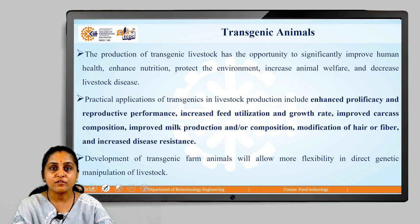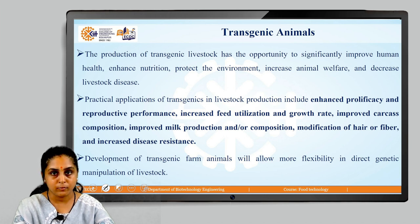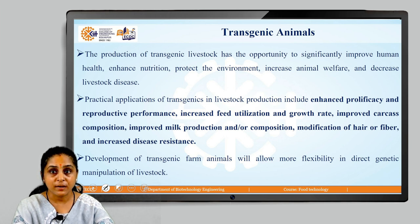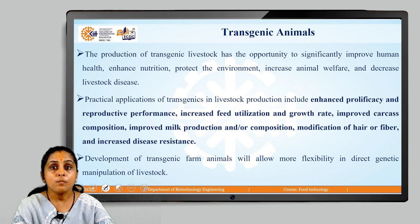Practical applications of transgenics in livestock production are many. They include enhanced prolificacy and reproductive performance, increased feed utilization, growth rate, improved carcass composition, improved milk production and composition, modification of hair or fiber, and increased disease resistance.